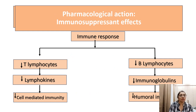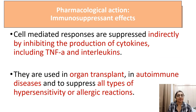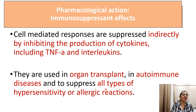Effect of corticosteroids on immune response: they decrease T-lymphocytes, decrease lymphokines, and decrease cell-mediated immunity. They also decrease B-lymphocytes, decrease immunoglobulins, and decrease humoral immunity, ultimately reducing the overall immune response. Cell-mediated responses are suppressed by inhibiting the production of cytokines including TNF-alpha and interleukins. They are used in organ transplantation, autoimmune diseases, and to suppress all types of hypersensitivity or allergic reactions.